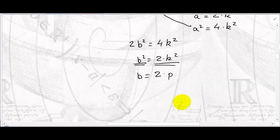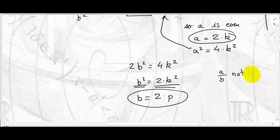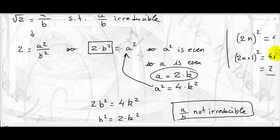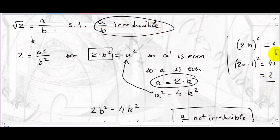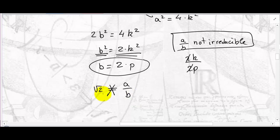So we have A is even and B is even. That means A over B is not irreducible, because you can divide at least by 2. Since A equals 2k and B equals 2p, you can reduce the fraction. We've reached a contradiction: I assumed A over B was irreducible, but my conclusion is that it is not. Therefore, root 2 cannot equal A over B with A over B irreducible, and root 2 is an irrational number.